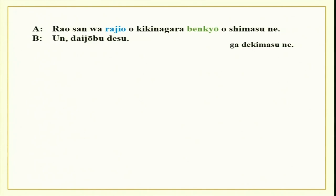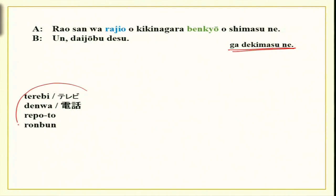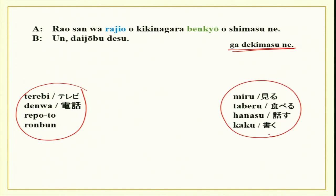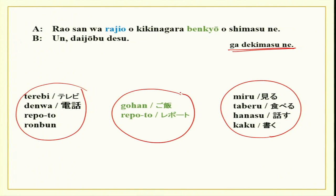Rao san wa rajio wo kikinagara benkyo wo shimasu ne — daijobu desu, that is alright. Or Rao san wa rajio wo kikinagara benkyo ga dekimasu ne — he can do his benkyo while listening to radio. Instead of rajio you can have terebi, denwa, repoto, rombun and shimasu. Instead of benkyo you can have gohan, repoto, and other verbs — miru, taberu, hanasu, kaku. Practice with your partner asking and answering.